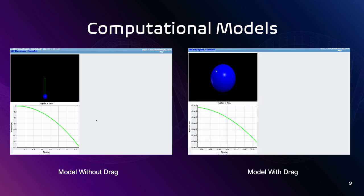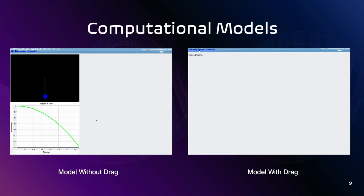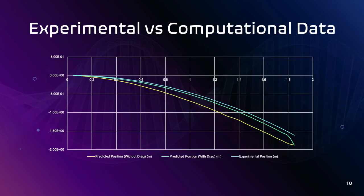Now, to plot our experimental versus computational data, it can be seen here that the predicted position without drag has seen to fall the greatest distance through the air. And the predicted position with drag, in the computational version, is seen to be somewhat similar, however, is still lesser than our predicted position without drag.